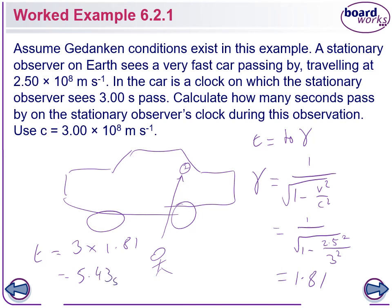So inside the car, 3 seconds has passed, but to an observer outside the car, 5.43 seconds has passed. The trick with this is just knowing which one is proper time and which one isn't. So you need to think, if you were in the car, if you're in the same frame of reference as the clock, you would see 3 seconds pass. So that's how you know that is proper time. If you're in the same frame of reference as it, that's proper time. If you're in a different frame of reference, you can't use that as your proper time.